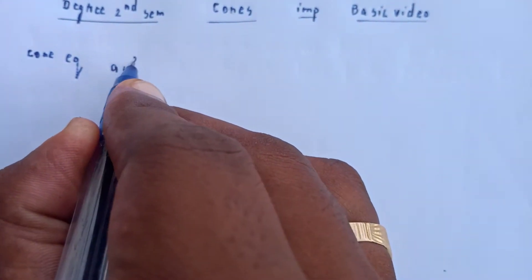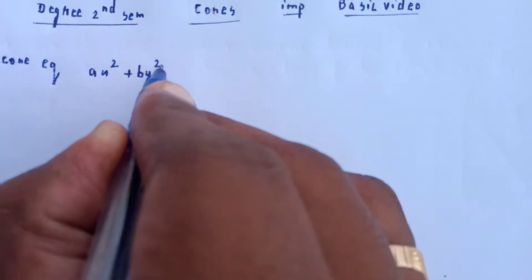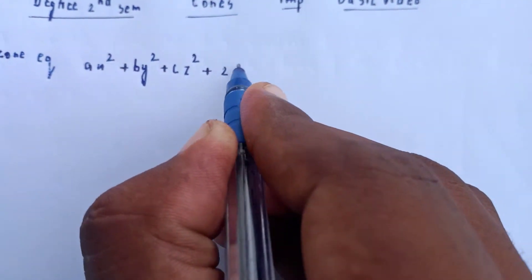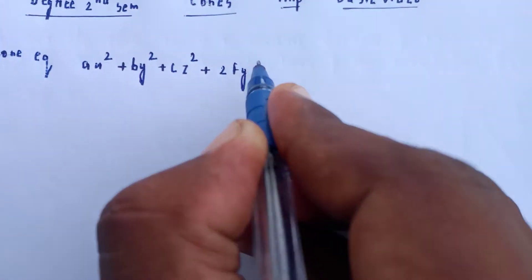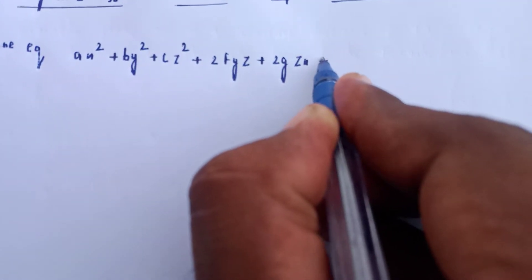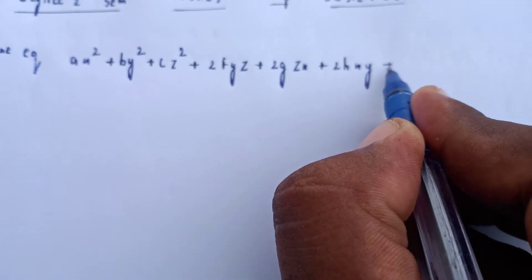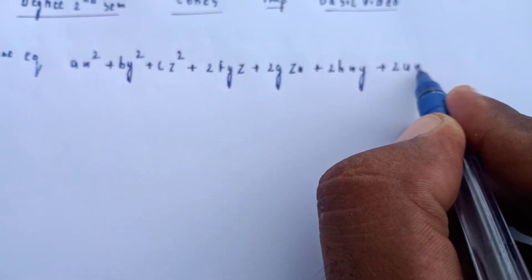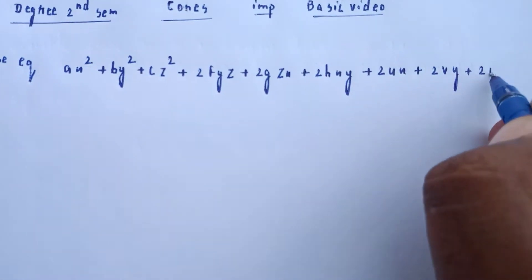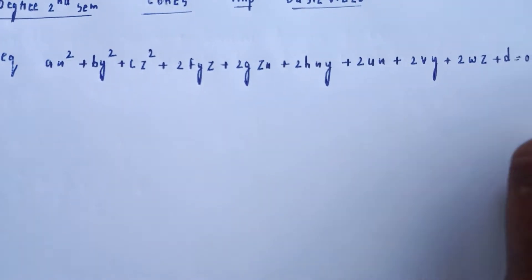The general second-degree equation: Ax squared plus By squared plus Cz squared plus 2fyz plus 2gzx plus 2hxy plus 2ux plus 2vy plus 2wz plus d is equal to 0. It is a kind of equation.